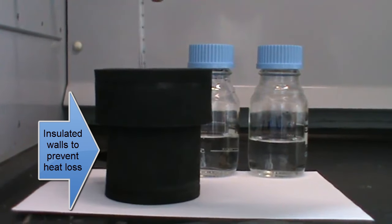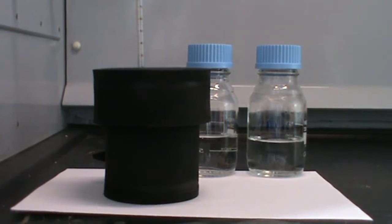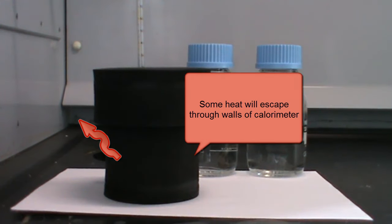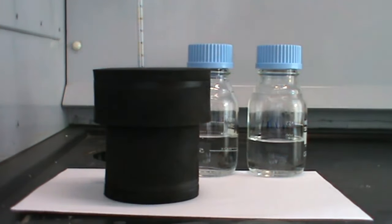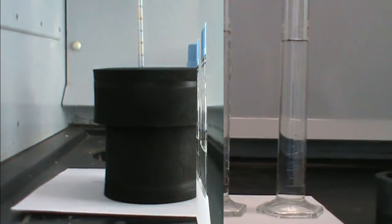We'll measure the increase in temperature in the reaction using a thermometer placed in the calorimeter. The problem is though that even though the calorimeter is insulated, some heat will still escape through the walls of the calorimeter. It's not perfect. So we need to first calibrate the calorimeter to see how much heat will be lost through the calorimeter.